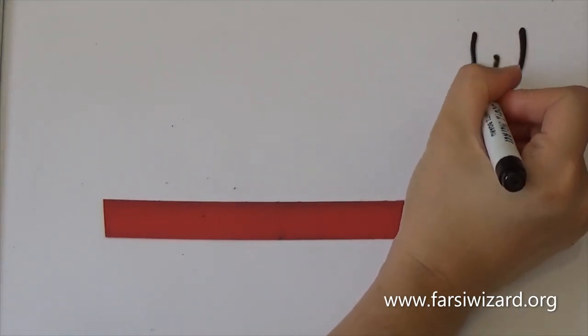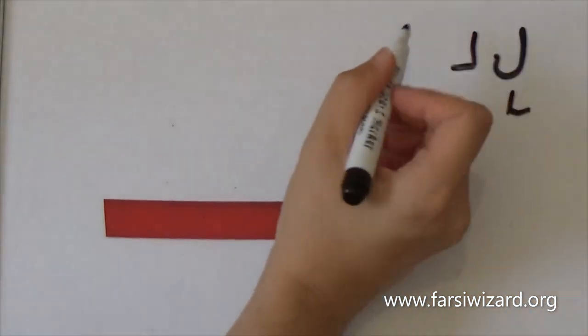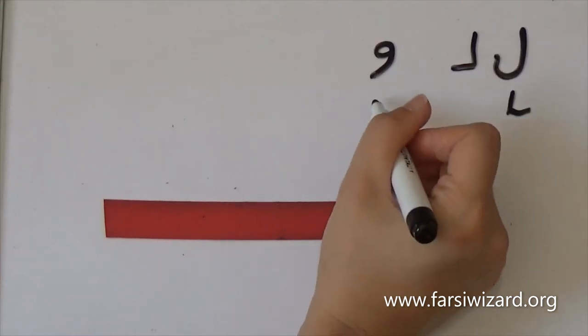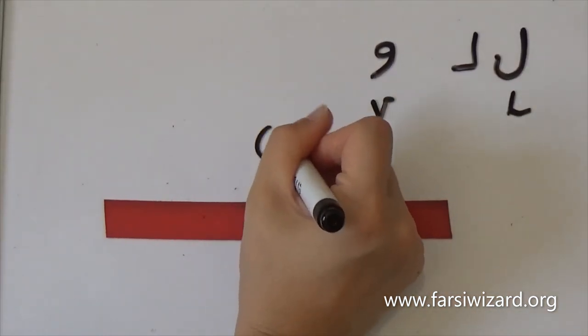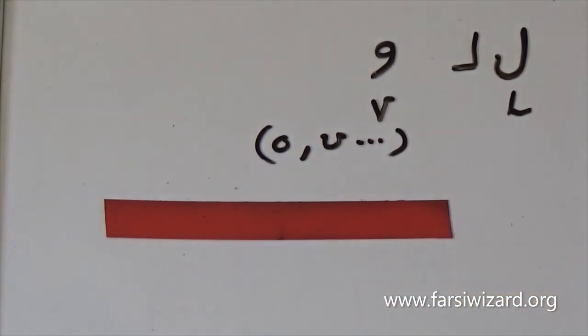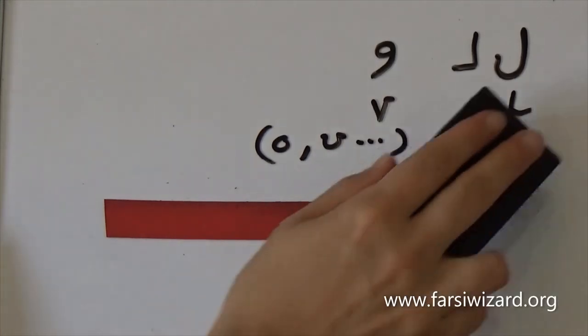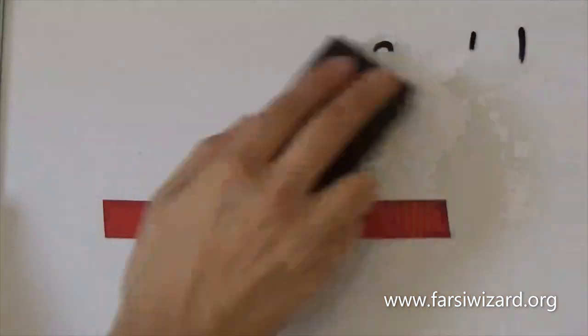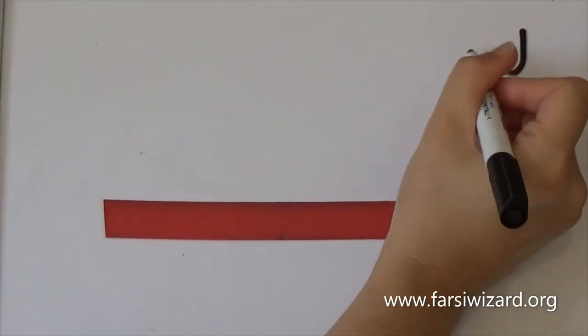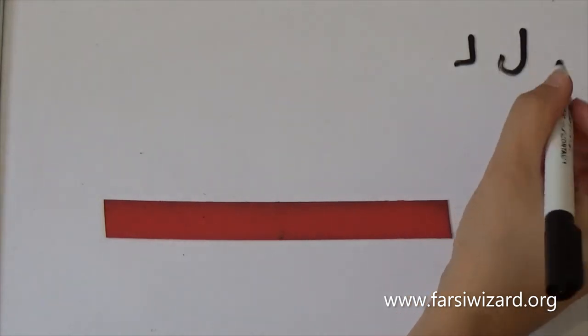The first one is lam which is the equivalent of L in English and the second one is vav which is the equivalent of V but also O, U and a couple of more sounds. You will see how this works. We are going to look at each of these letters separately along with a couple of examples. Make sure that you also review your other letters from previous videos because you will see other letters in these examples as well.